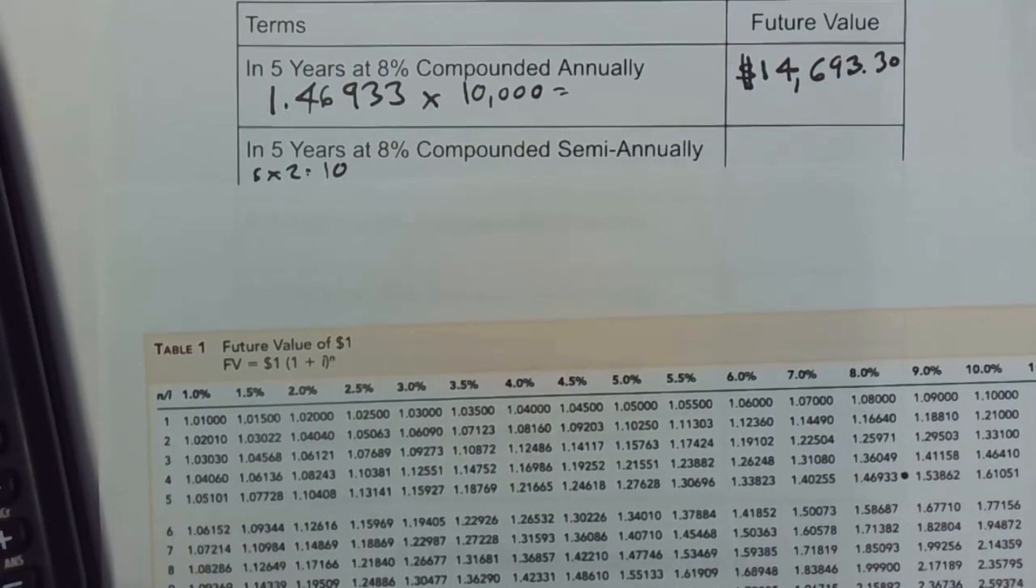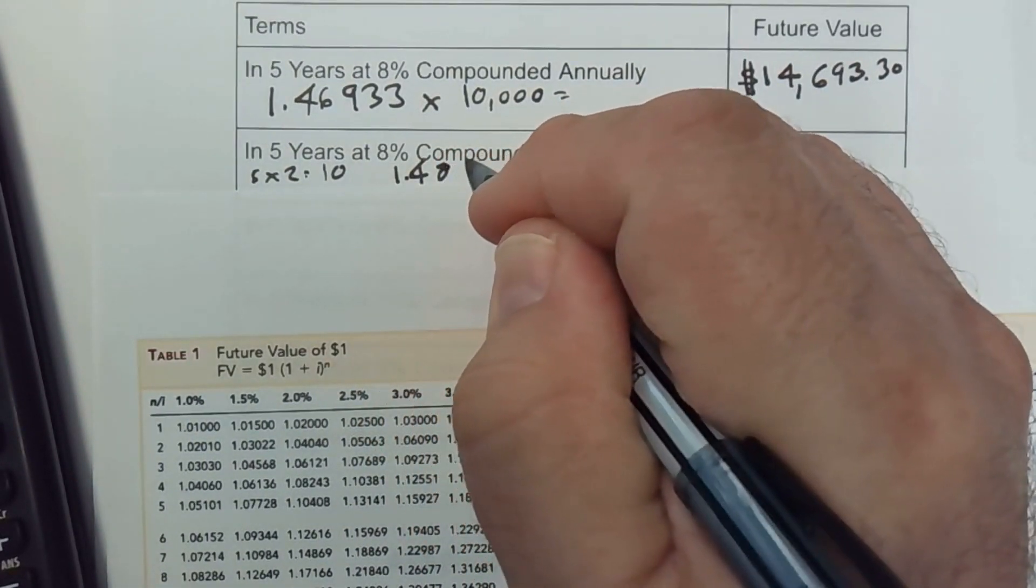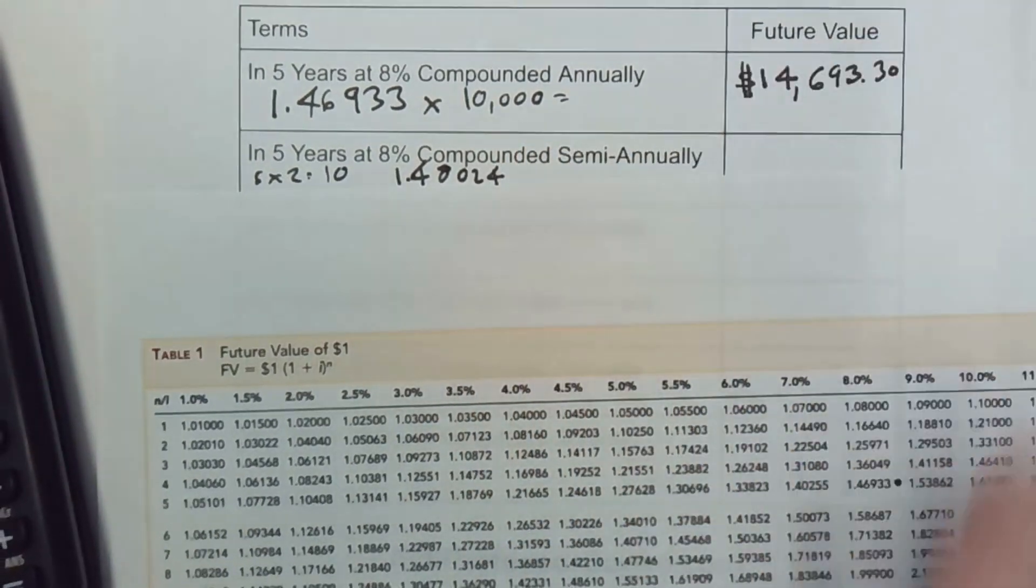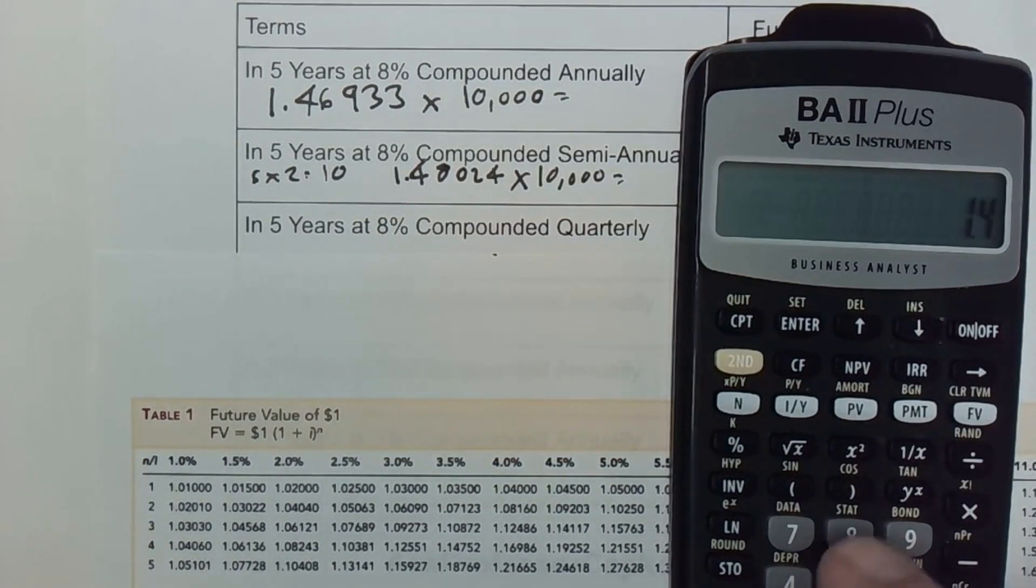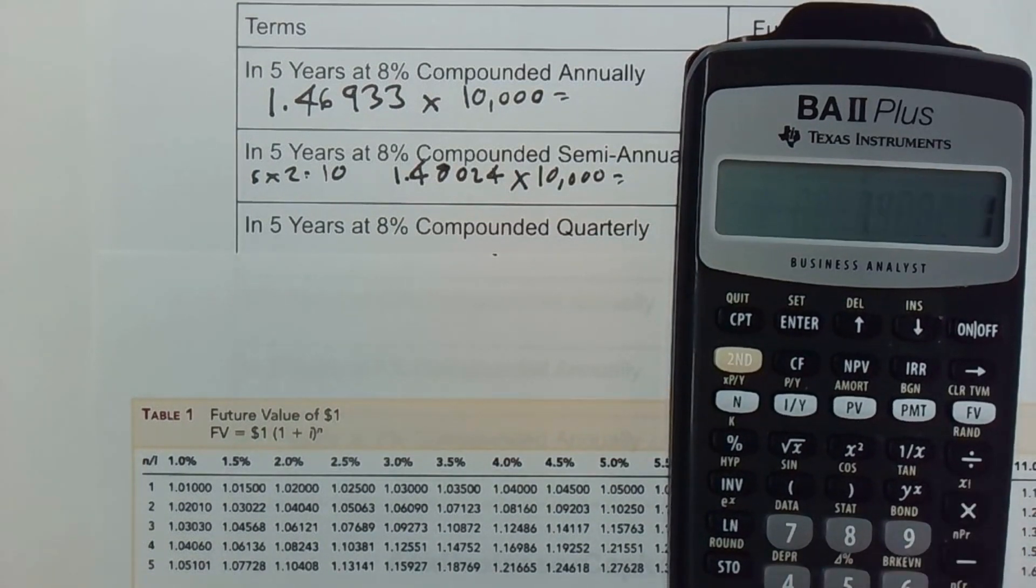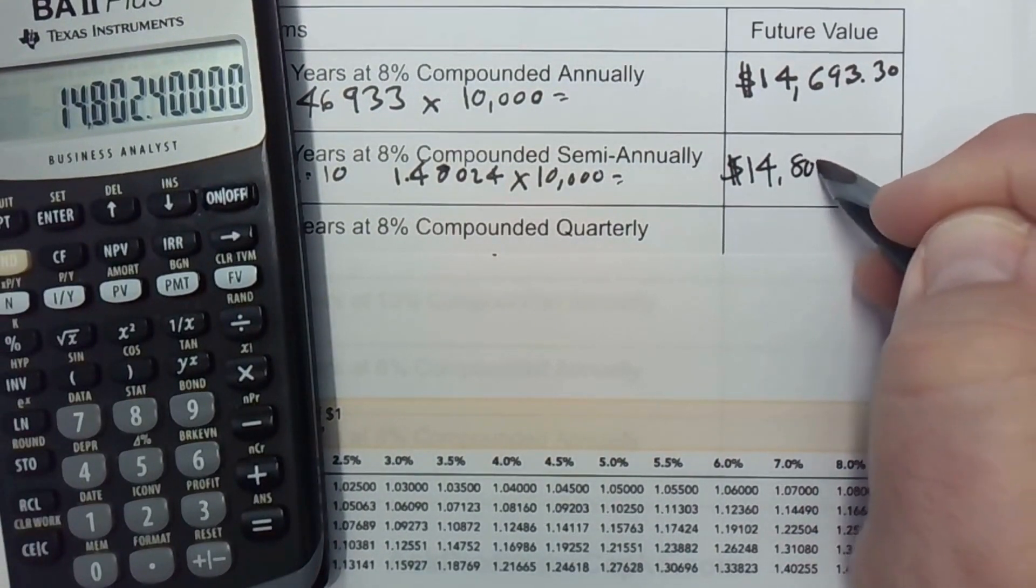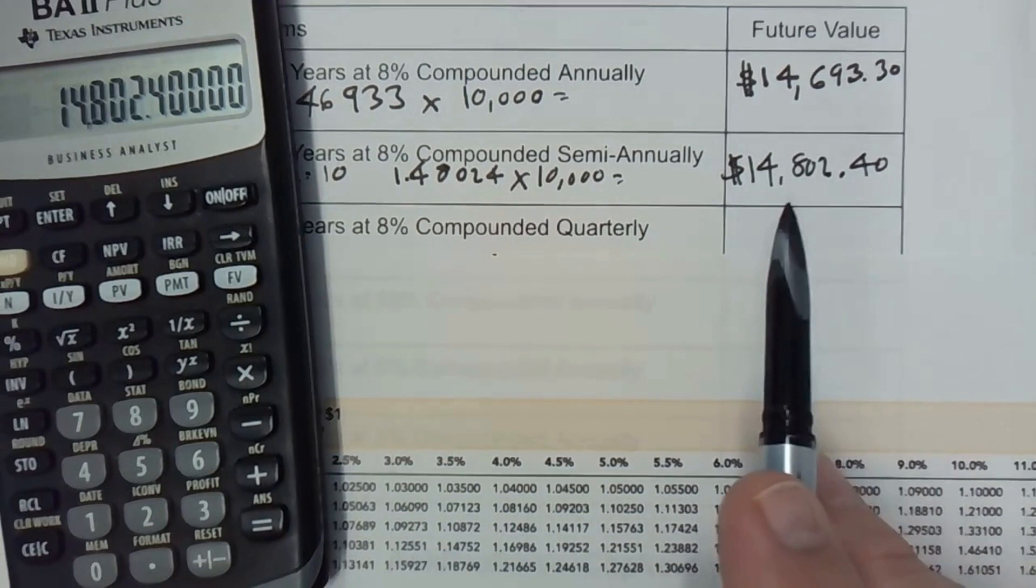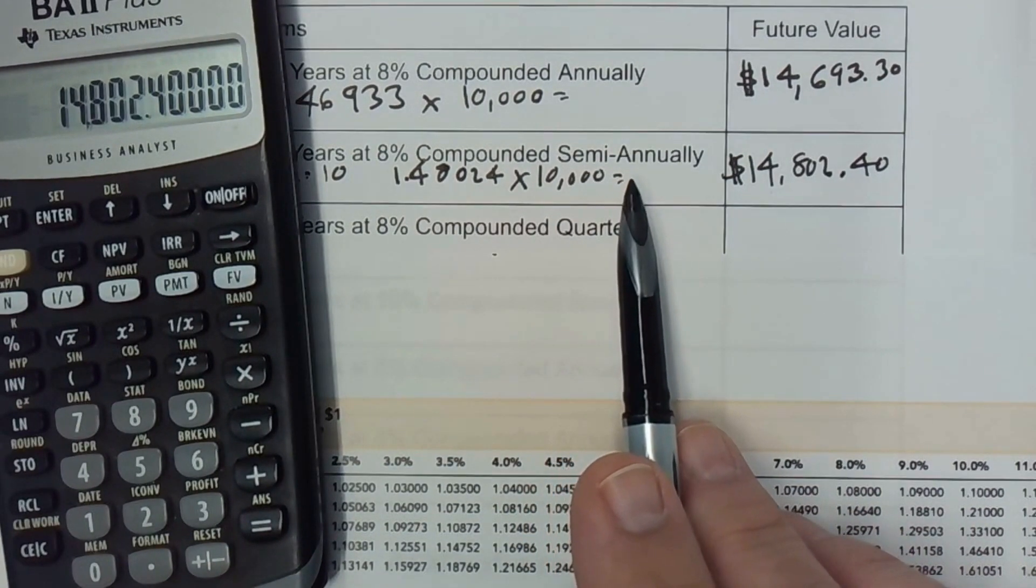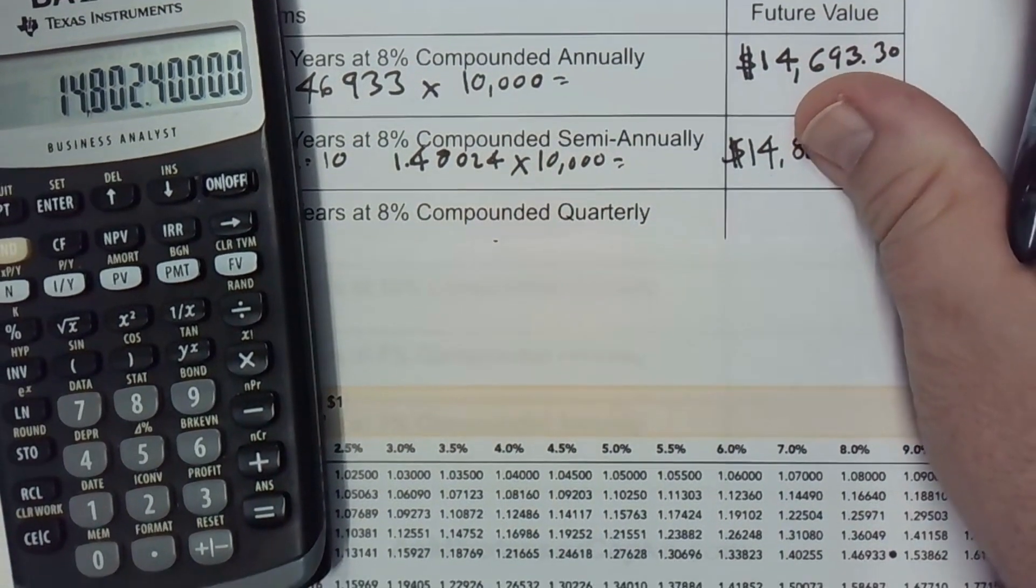I'm going to multiply that by the 10,000. 1.48024 times 10,000 equals $14,802.40. And it is more than we earned here, and that is to be expected because there's more compounding periods. We're earning interest on interest faster. So when there's more compounding periods, you're going to earn more money.